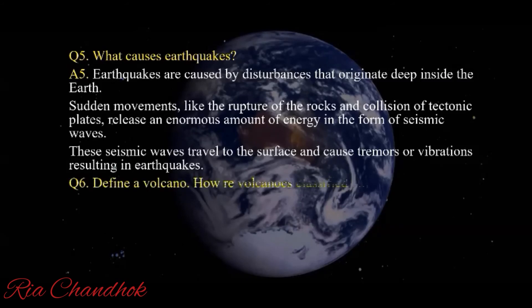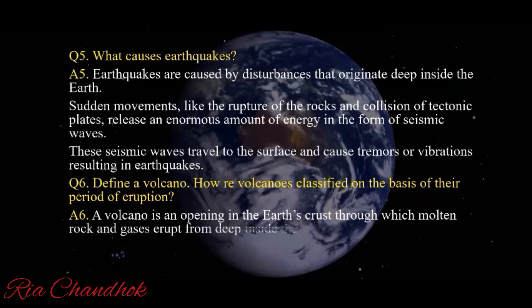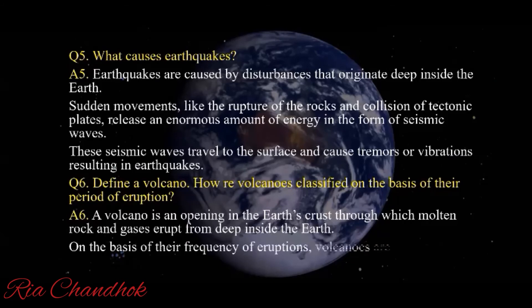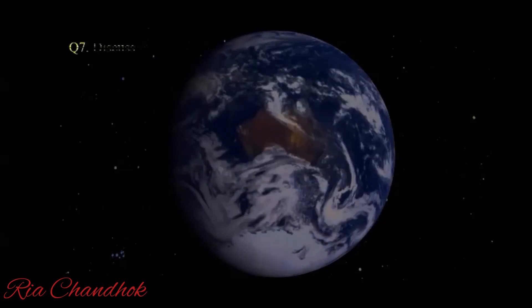Next: define a volcano and explain how volcanoes are classified on the basis of their period of eruption. A volcano is an opening in the earth's crust through which molten rock and gases erupt from deep inside the earth. On the basis of their frequency of eruption, volcanoes are classified as active volcano, dormant volcano, and extinct volcano.